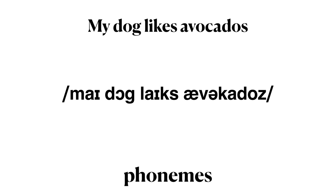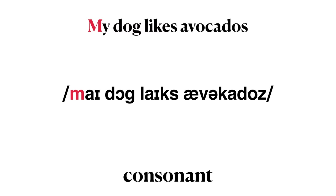Let's go through the phonemes in 'My dog likes avocados.' First, we have the word 'my,' represented by two phonemes. Next, the word 'dog' is represented by its IPA pronunciation. In 'my,' the first phoneme is /m/, which is a consonant. The second phoneme is the diphthong /aɪ/, which is a vowel. Then we have the first phoneme in 'dog': /d/, which is a voiced consonant.